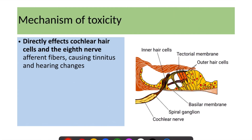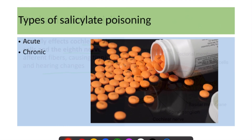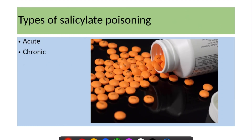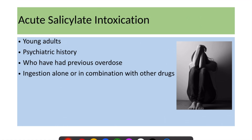Salicylates can directly affect the cochlear hair cells and the auditory nerve, which can cause tinnitus and hearing changes. Salicylate poisoning can be acute or chronic; we will mainly focus on acute poisoning. Acute salicylate intoxication usually occurs in young adults with a history of psychiatric illness who have had previous overdose.